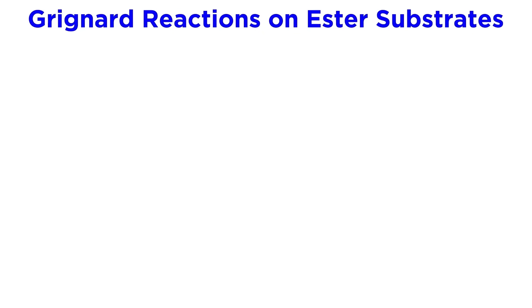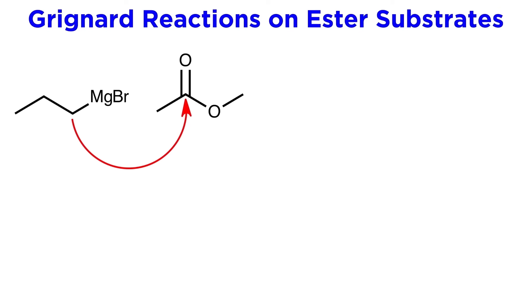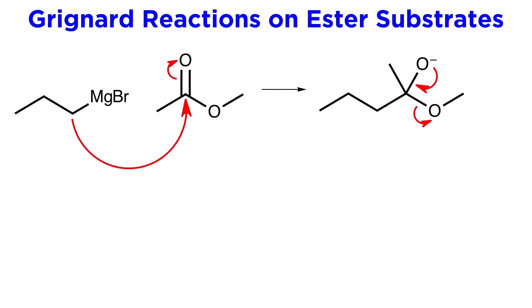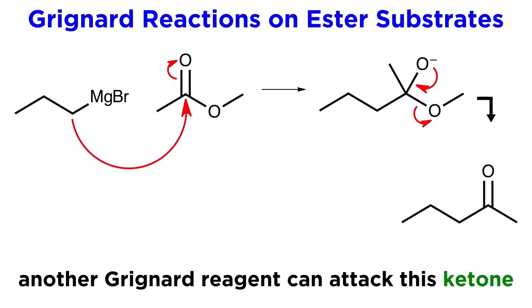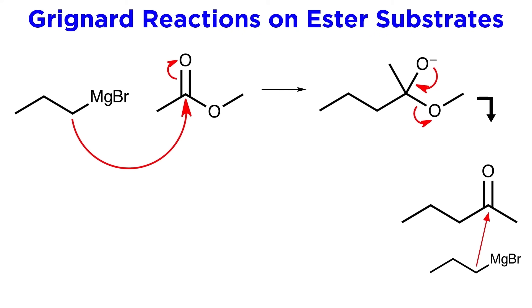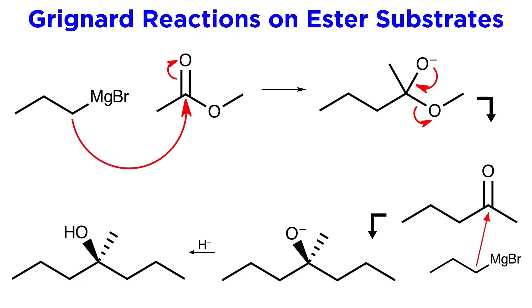Grignard reagents can also react with a few other substrates, such as ester substrates, but there will be a slight difference. When this Grignard reagent attacks an ester, the pi bond gets kicked up, but because of the alkoxy group, the carbonyl can reform and kick off the alkoxy group, giving a ketone intermediate. Because there are more Grignard reagents in solution and they can attack ketones, another one will attack the carbonyl at the same location, and this time we can protonate the oxyanion. So we ended up adding two alkyl fragments to the same carbon, and this will be our product — again an alcohol.